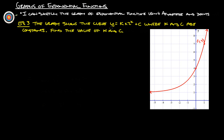Example three: the graph shows the curve y equals k times two to the x plus c, where k and c are constants. Find the value of k and c. We know that c is always going to be the horizontal asymptote. Looking at the graph, the horizontal asymptote appears to be one, so c equals one.